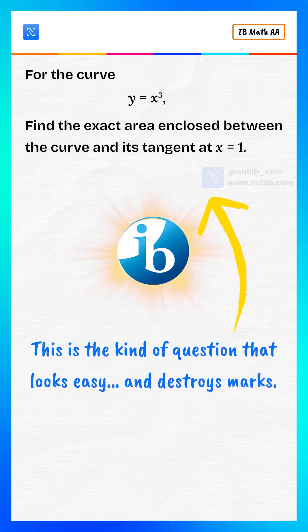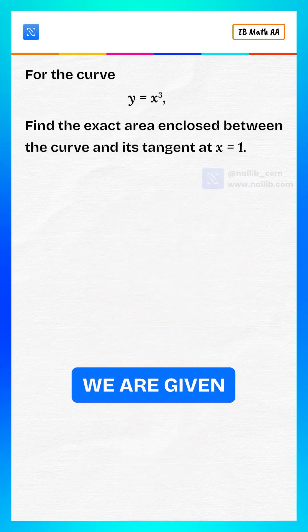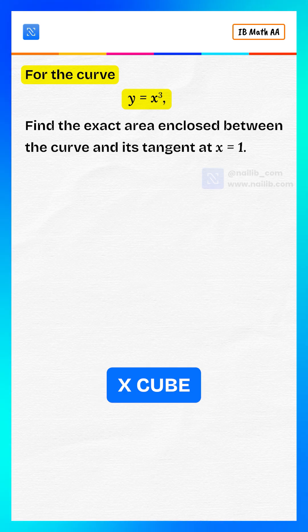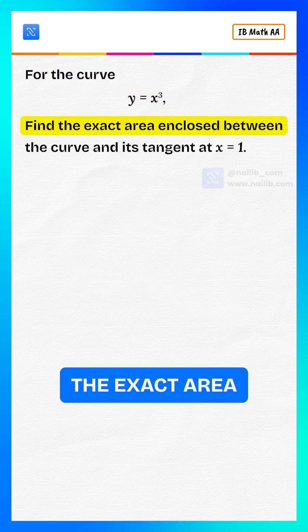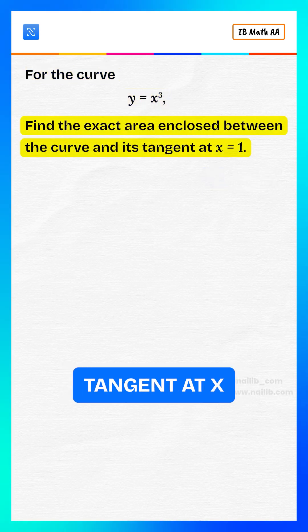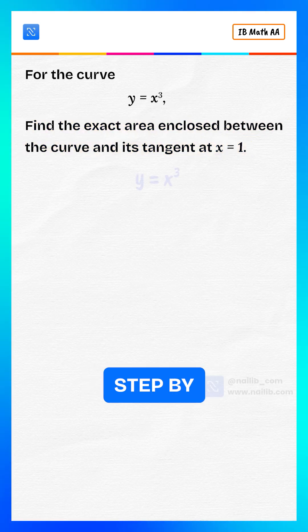This is the kind of question that looks easy and destroys marks. We are given the curve y equals x cube, and we find the exact area enclosed between the curve and its tangent at x equals 1. Let's solve step by step.